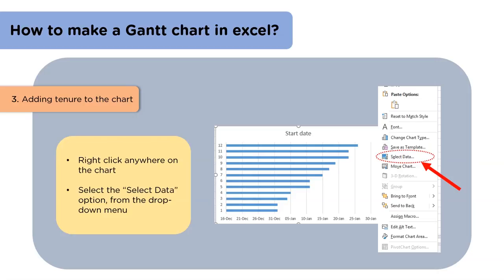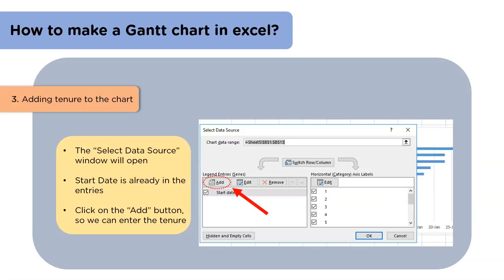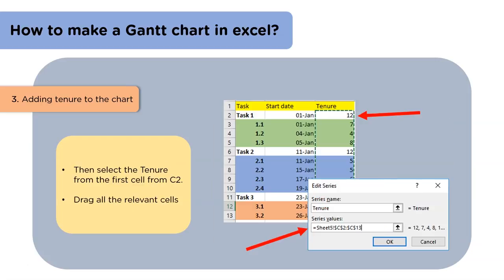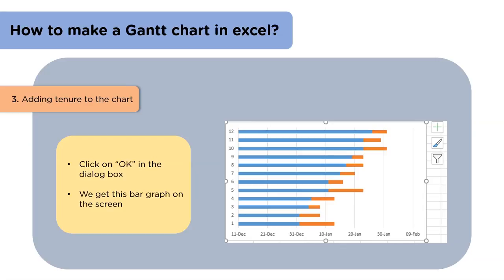In the third step, we will add the duration to the bar graph. We will right-click on the chart and in the menu that appears, we will select the Select Data option. In the window that appears, we will select the Add option. We can also see the start date is already in the entry section. Then in the dialog box that appears, type 'tenure' in the series name and click on the range selection icon. Now select the relevant data from the tenure column and click on OK. We can now see a bar graph with two colors on the screen — this bar graph now has the duration of the tasks.